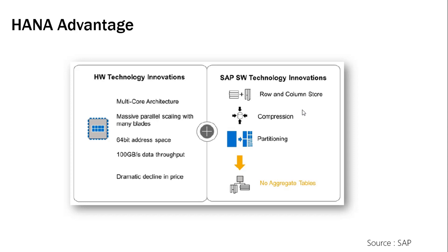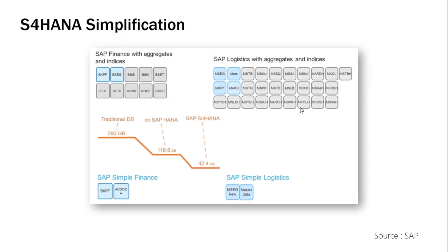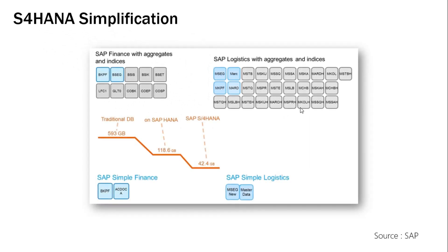SAP HANA made S/4HANA and other SAP products very fast, which led to S/4HANA simplification. Because of the power at the database level, SAP reduced many tables — for example, SAP Finance, which had so many tables, now has Simple Finance with just a few. Similarly, SAP Logistics was reduced to a couple of tables. You can see from the graph how S/4HANA has compressed the overall database requirement, making the system more agile and more user-friendly.